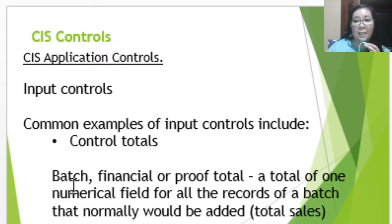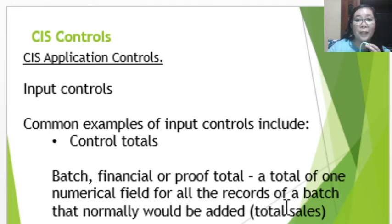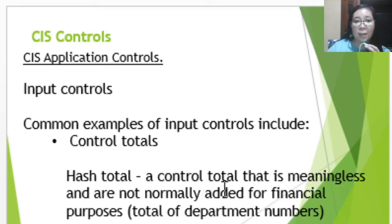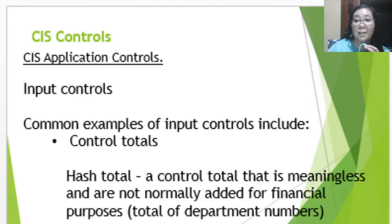Another control total is the batch, financial, or proof total. This is a total of one numerical field for all the records of a batch that would normally be added — for example, total daily or monthly sales. Another is the hash total, which is a control that is meaningless and not normally added for financial purposes. For example, totaling department numbers — this is not normally used, but it is still part of control totals.